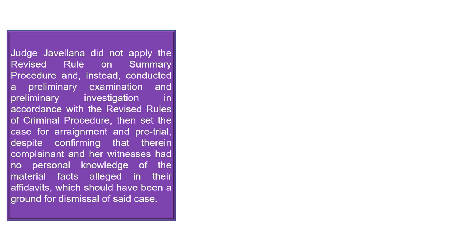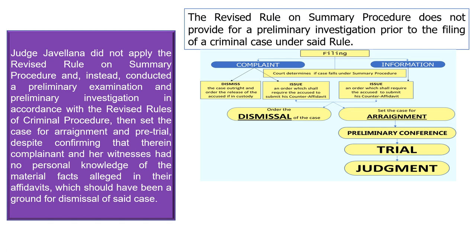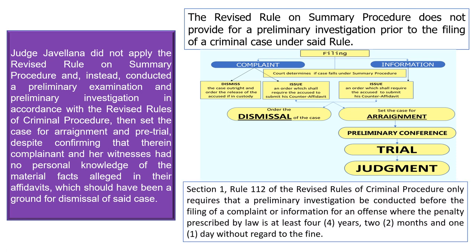Last issue: Judge Jabiliana did not apply the rule on summary procedure; instead, he conducted a preliminary examination and preliminary investigation in accordance with the rule on criminal procedure. Is he correct? Definitely no. Since the case is malicious mischief, the revised rule on summary procedure applies, and that rule does not provide for a preliminary investigation prior to the filing of a criminal case. Recall Section 1, Rule 112: a preliminary investigation is only required before the filing of a complaint or information for an offense where the penalty prescribed by law is at least four years, two months, and one day.